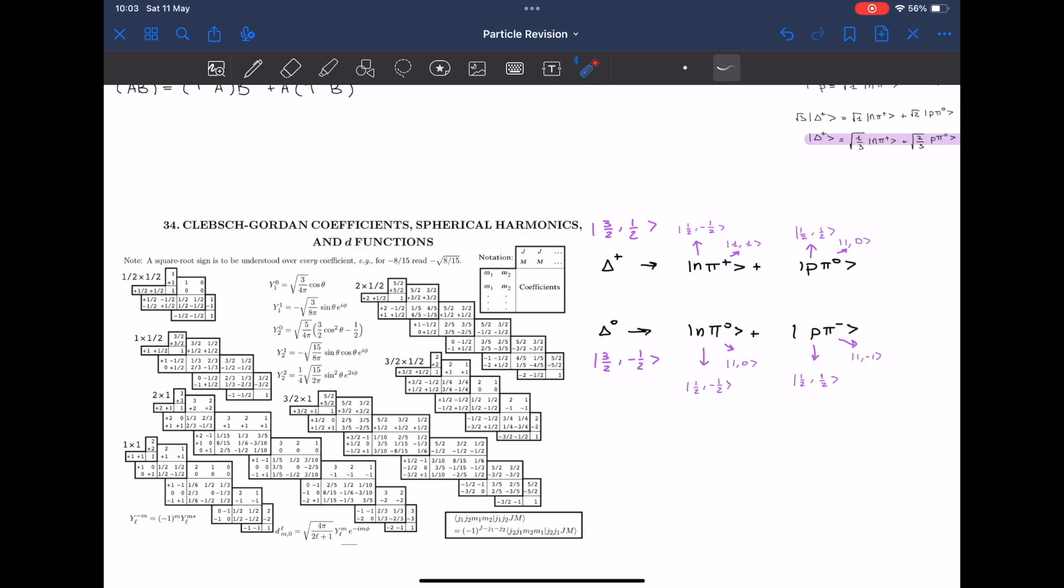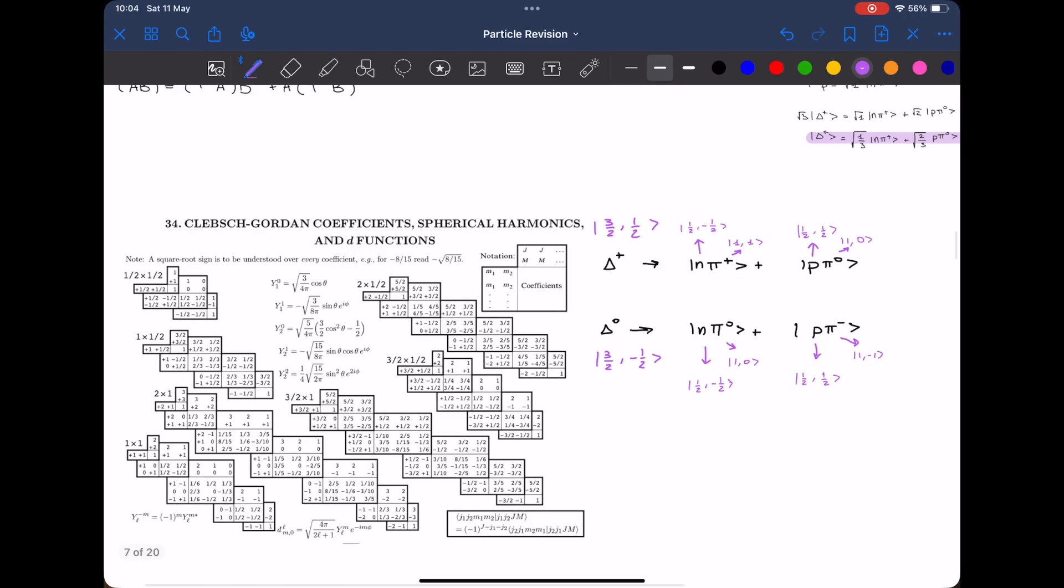We need to find the table that has the correct projections, the correct isospin. To do that we look at this one. So this one has to have the isospin of a half and the isospin of one. Again here we have a half and one. So we want the one with one and a half. This is the correct table that we will use for this decay.